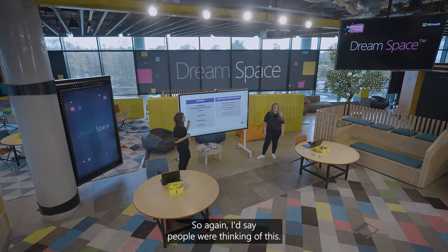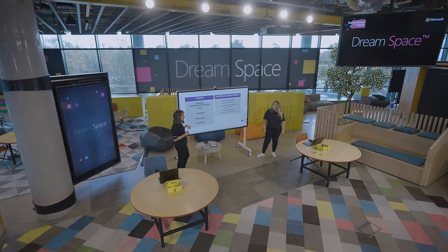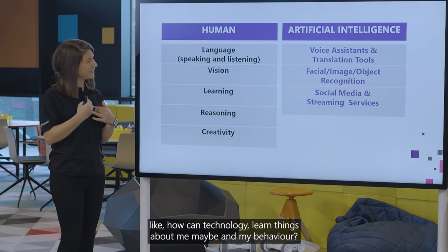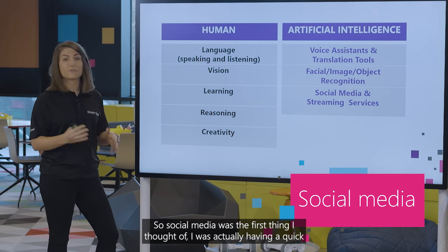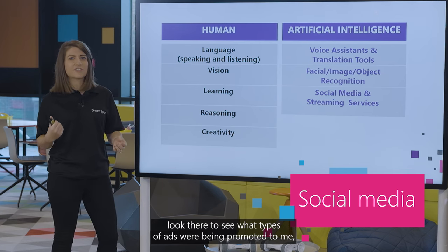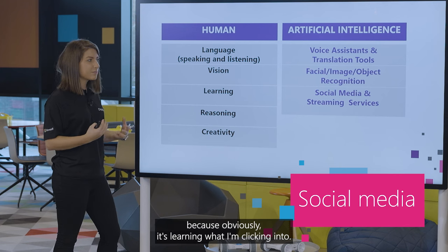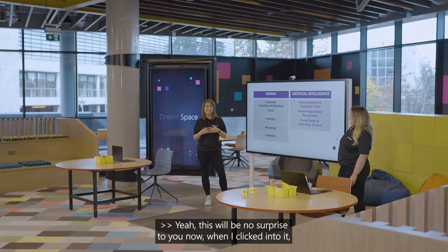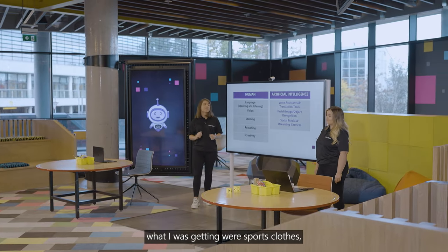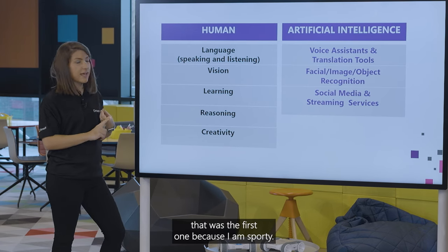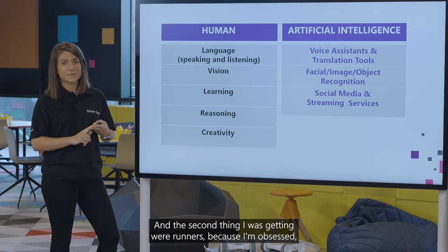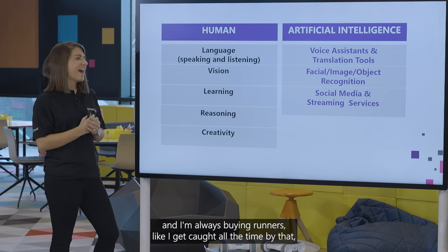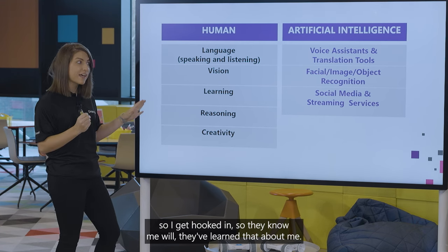The next one is learning. How can technology learn things about me and my behavior? Social media was the first thing I thought of. I was having a quick look to see what types of ads were being promoted to me, because it's learning what I'm clicking into — my behavior, what I like. When I clicked in, the ads I was getting were sports gear, because I'm sporty, and runners, because I'm obsessed and always buying them. So they've learned that about me.